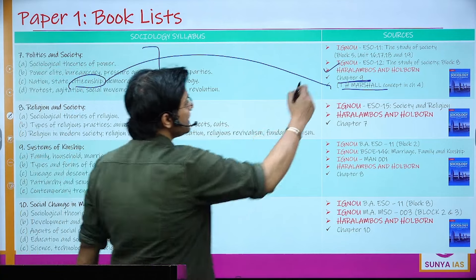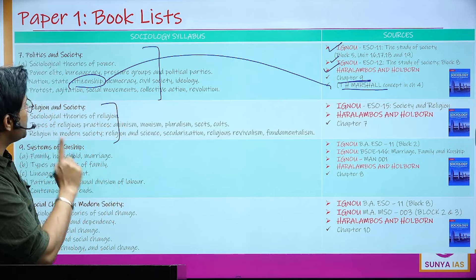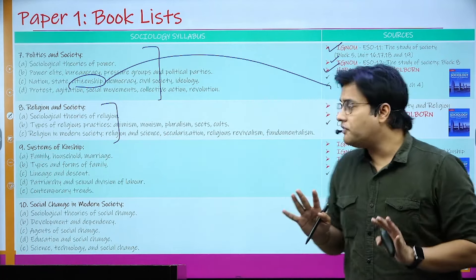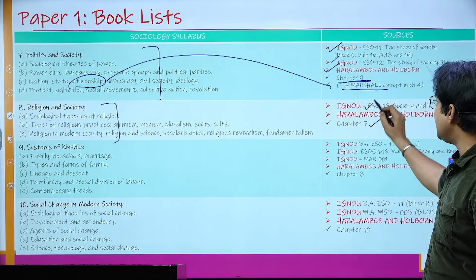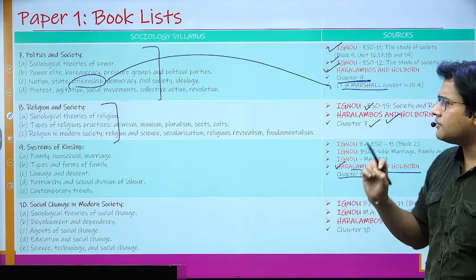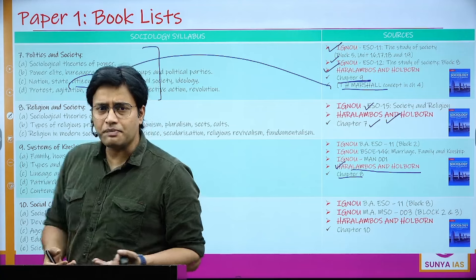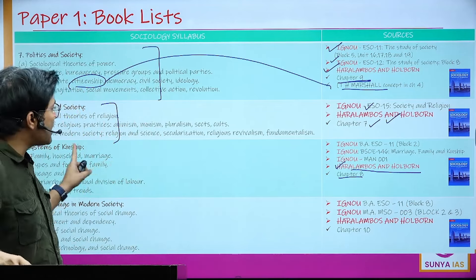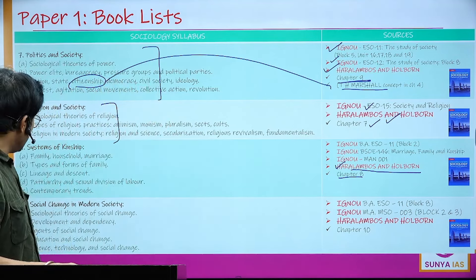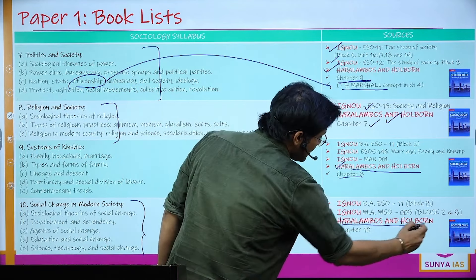For Religion and Society, covering sociological theories of religion including functionalist and evolutionary perspectives, refer to Haralambos Chapter 7 and the relevant IGNOU material. For Systems of Kinship, Haralambos Chapter 8 covers thinkers' perspectives like Kathleen Gough and G.P. Murdoch, various types of family, and important studies. Apart from that, refer to the specified IGNOU materials. For Social Change in Modern Society, refer to Haralambos Chapter 10.